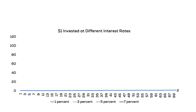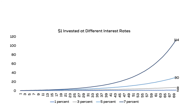To show the power of compound interest, consider saving one dollar over 70 years. At one percent interest, you will have two dollars. At three percent, you will have eight dollars — the interest rate tripled but savings quadrupled. At five percent, savings grow to 30 dollars. At seven percent, your savings double every 10 years, reaching 114 dollars over 70 years.